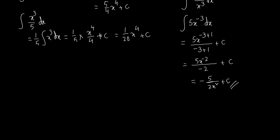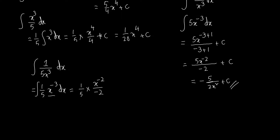For the expression 1 over 5x cubed, we isolate 1/5 as a constant and rewrite x to the power negative 3. Integrating gives 1/5 times x to the power minus 2 divided by minus 2 plus C. Simplifying, the result is minus 1 over 10x squared plus C.